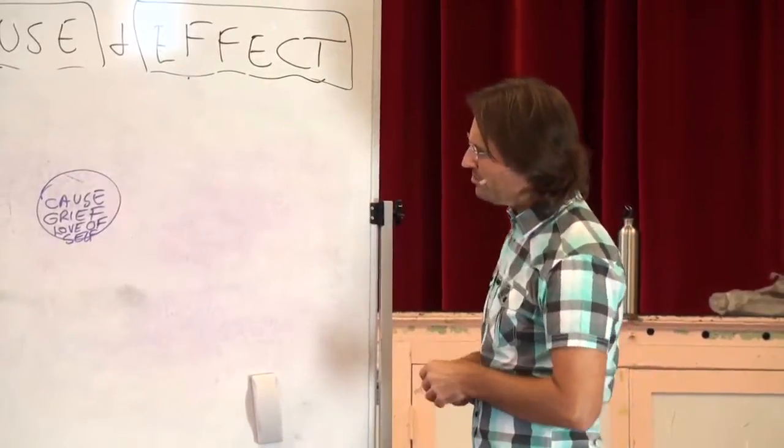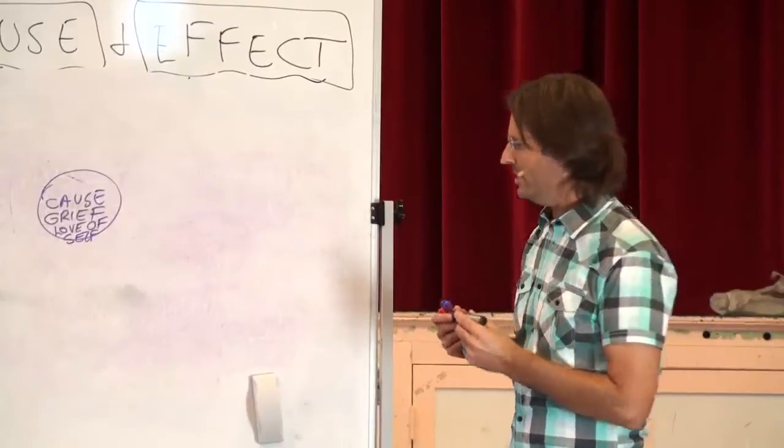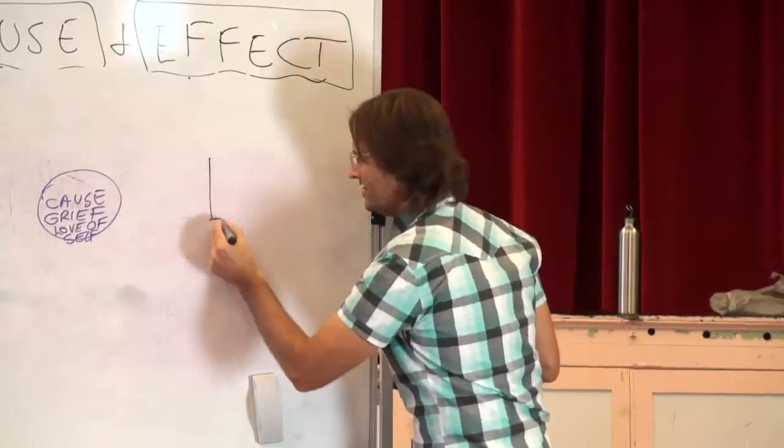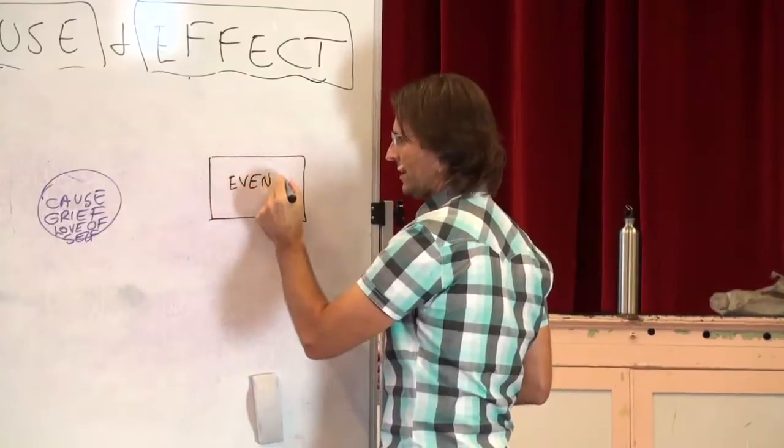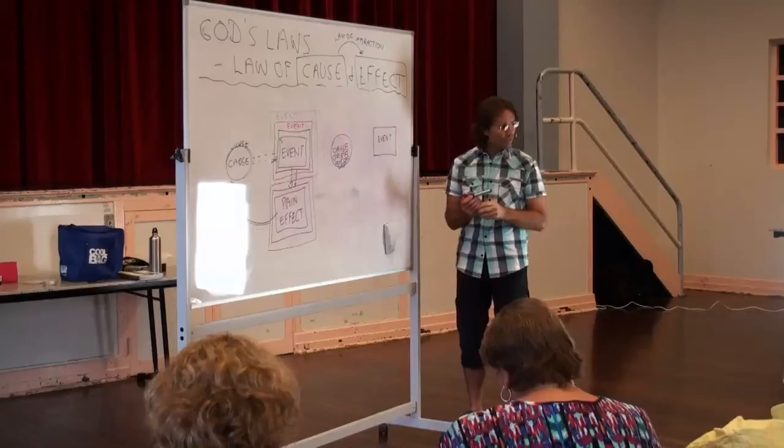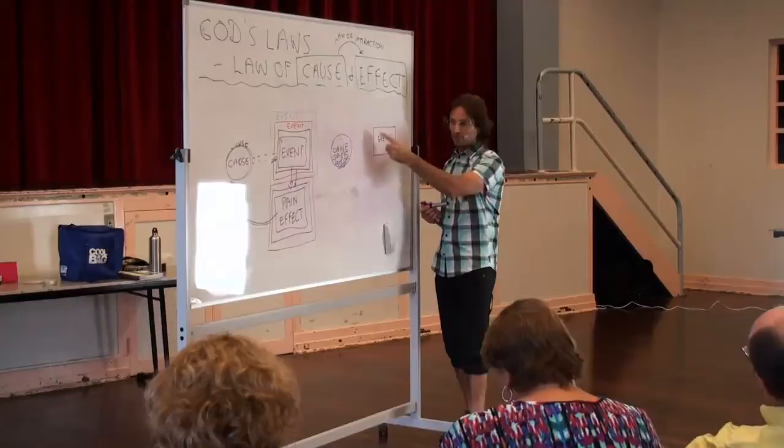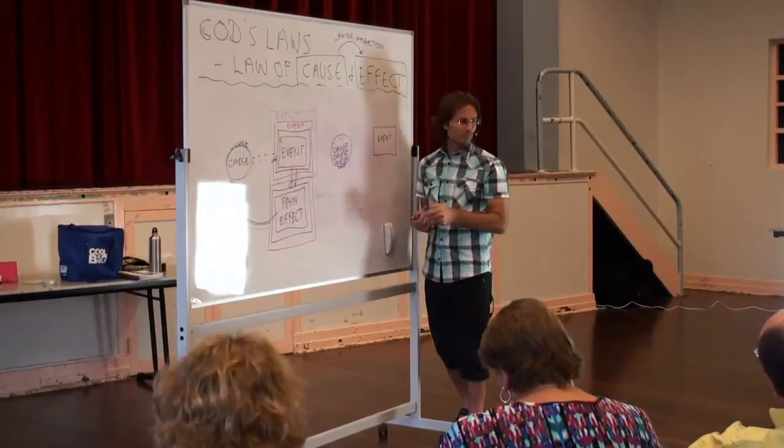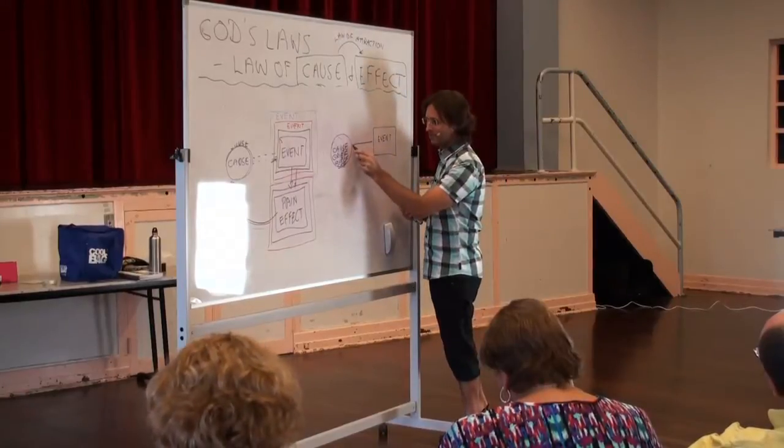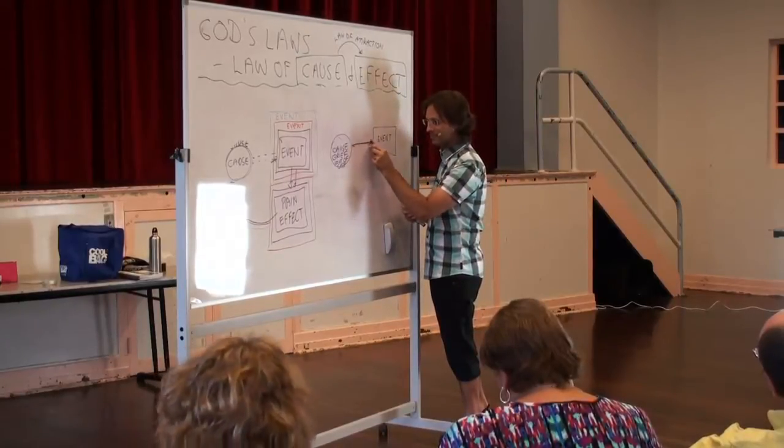Now because we don't love ourselves and we're yet to grieve it, it creates an event. The event's purpose is to trigger the emotion that we don't love ourselves and the grief associated with not loving ourselves. Does that make sense?